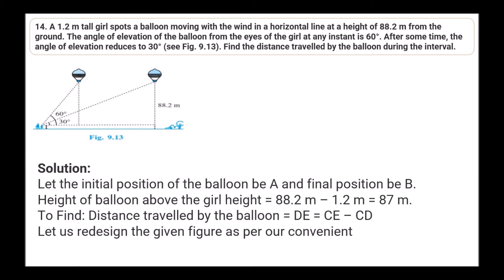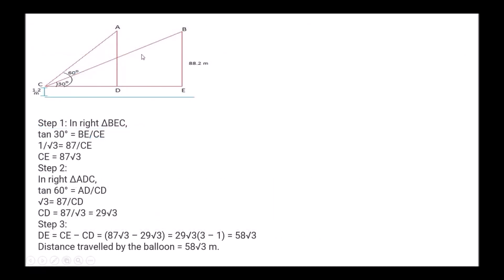Question 14: A 1.2-meter tall girl spots a balloon moving with the wind in a horizontal line at a height of 88.2 meters from the ground. The angle of elevation from her eyes is initially 60°, then reduces to 30°. Find the distance traveled by the balloon. Height above the girl = 88.2 − 1.2 = 87 meters. Distance traveled = CE − CD.